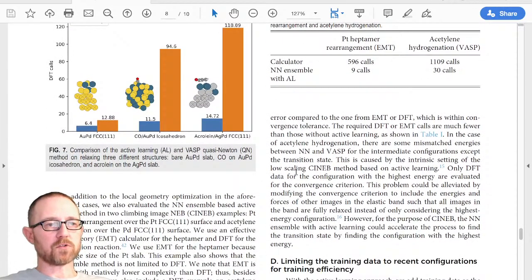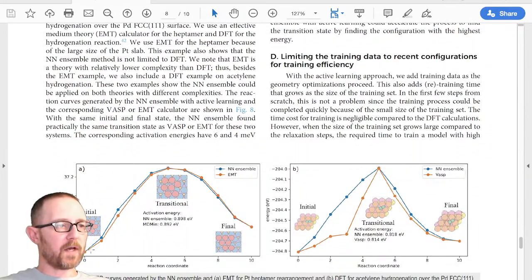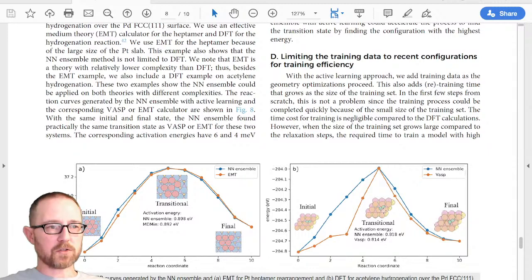This doesn't work just for DFT calculations and geometry optimizations. We can also look at nudged elastic band, which is a different kind of constrained optimization. So with the nudged elastic band, you have a chain of images and you run an optimization on that chain where you constrain the forces by projecting the ones out parallel to the band. And what you can see here for two different examples: one is this heptamer rearrangement of platinum, and the other one is acetylene hydrogenation. So this one is a very large calculation we ran with EMT. This is a DFT calculation.